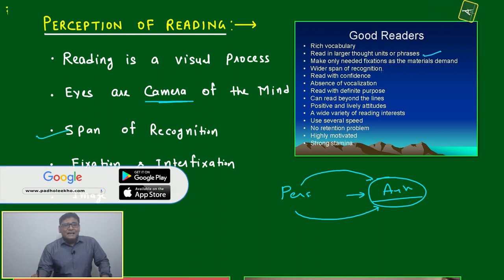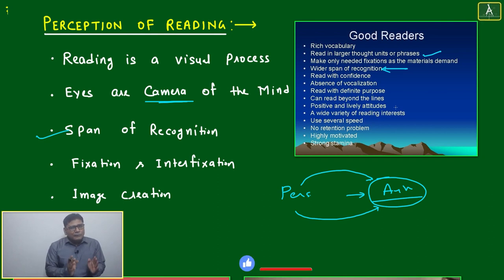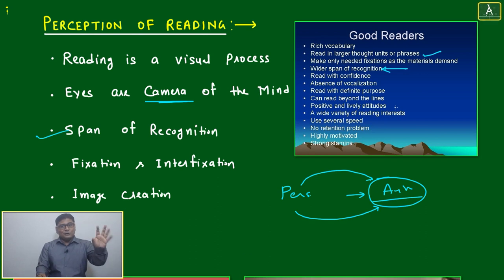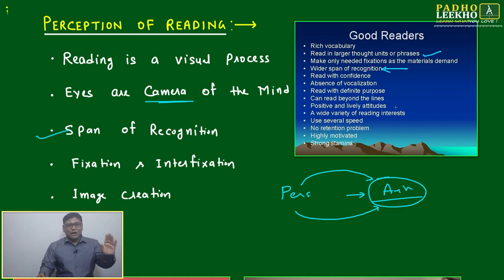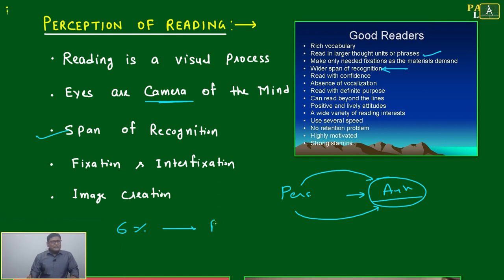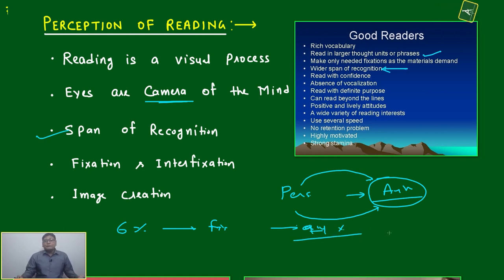Make only the needed fixations as the material demands. A wider span of recognition is better. Generally we are habituated to making many breaks — reading one word, then pausing, then reading the next word and pausing again. The data shows that only six percent of time is spent on fixation, while 94 percent goes to inter-fixation and pausing. How much time we are wasting — that automatically makes our reading time very high.